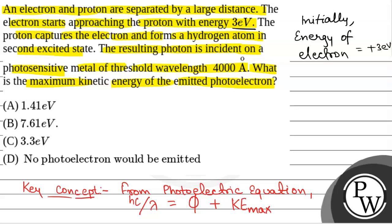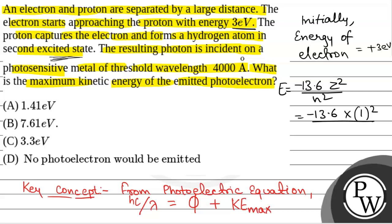The proton captures the electron and forms a hydrogen atom in second excited state. The energy will be given as minus 13.6 Z squared by n squared. For the second excited state, n will be equal to 3. So that will be equal to minus 13.6 into Z squared — Z is 1 because it is a hydrogen atom, so atomic number is 1 — giving minus 13.6 by 9, which equals minus 1.51 electron volt. This is the final energy of the electron.